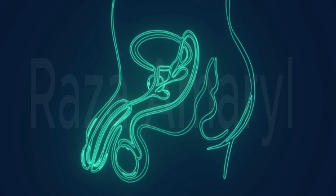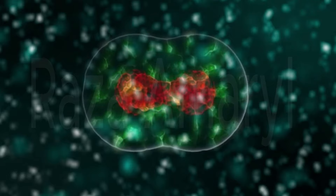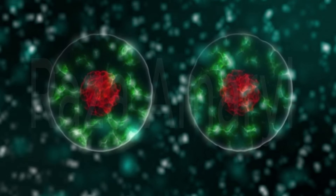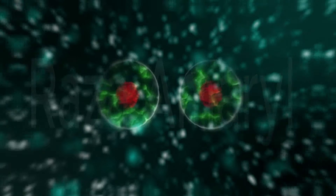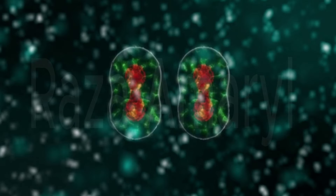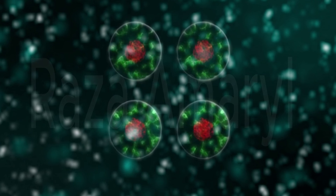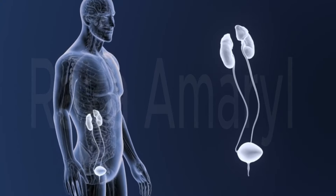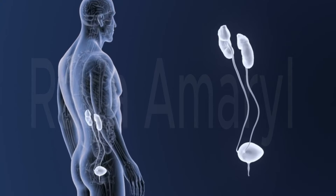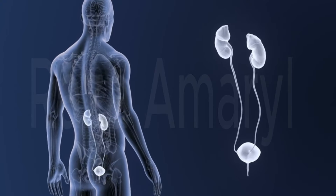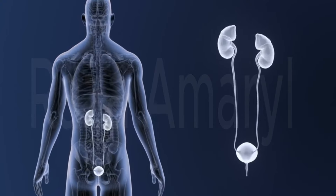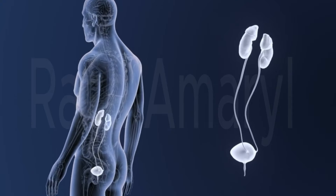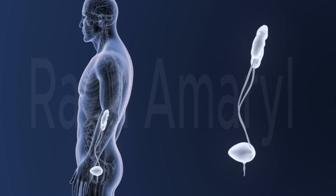Nervous System: The nervous system controls and coordinates body functions. It is composed of the brain, spinal cord, and nerves. Reproductive System: The reproductive system is involved in the production of offspring. It differs between males and females and includes organs such as the ovaries, uterus, testes, and penis.